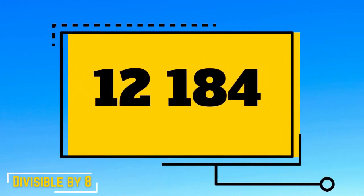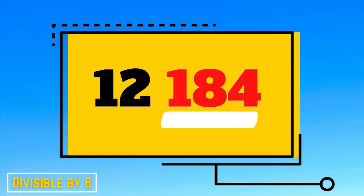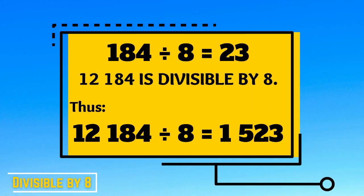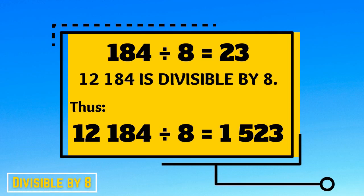For example, 12,184. Is 12,184 divisible by 8? Let's take a look at the last three digits of the number. The last three digits of 12,184 is 184. If we divide 184 by 8, the answer is 23. Therefore, yes, 12,184 is divisible by 8. Thus, 12,184 divided by 8 is 1,523.